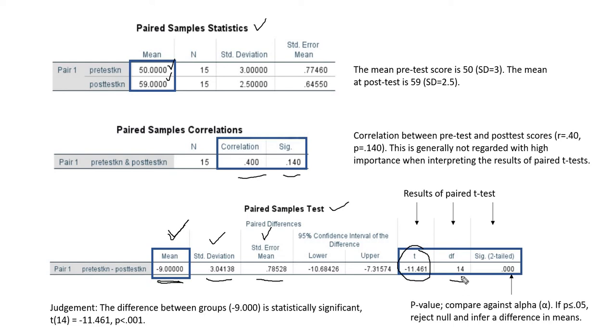The degrees of freedom for our analysis is essentially computed as the sample size minus 1. So we had 15 observations in our data set, so if we subtract 1 we get 14.